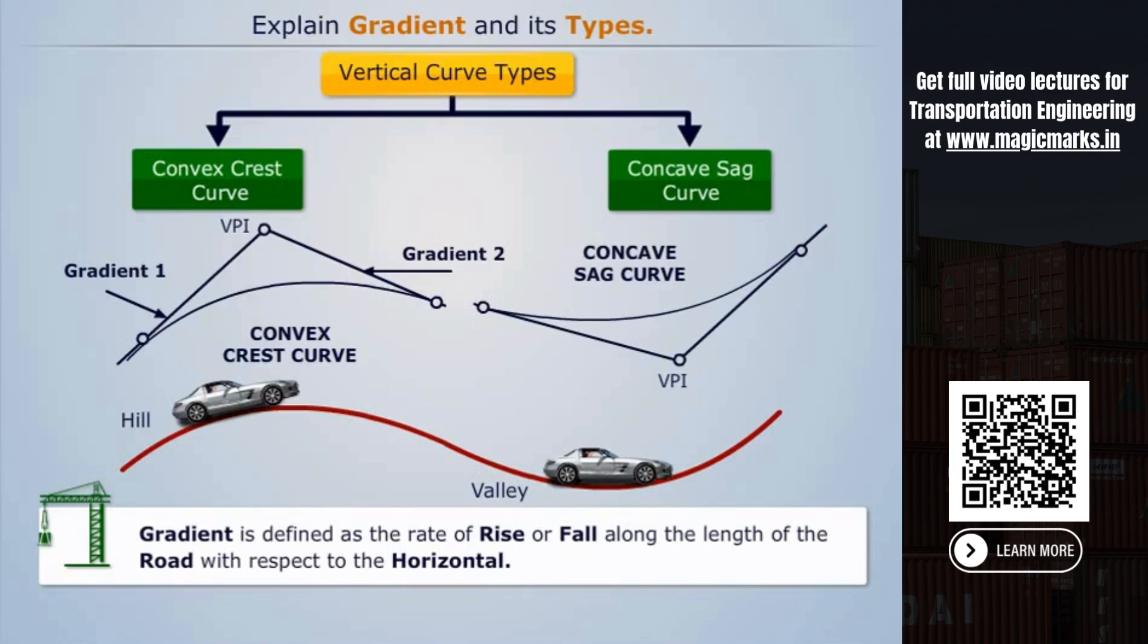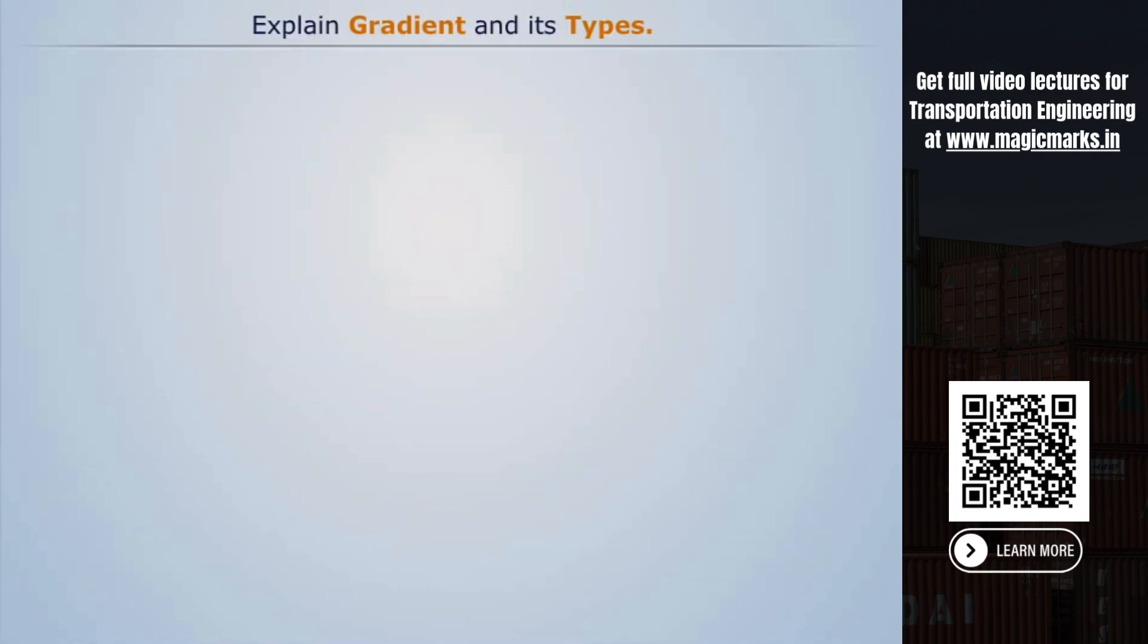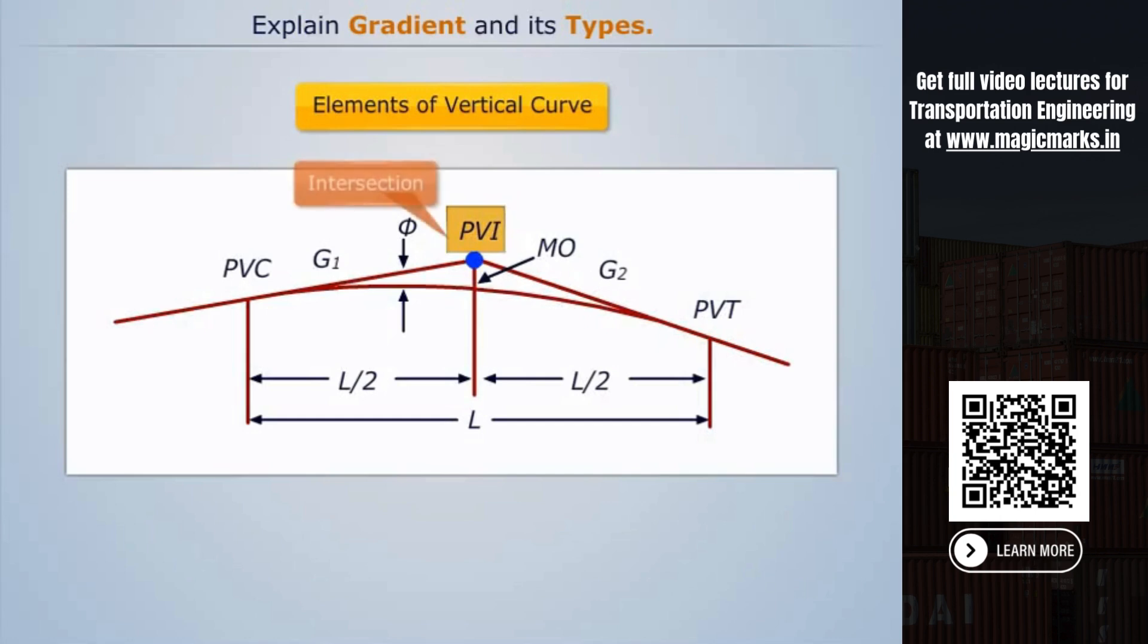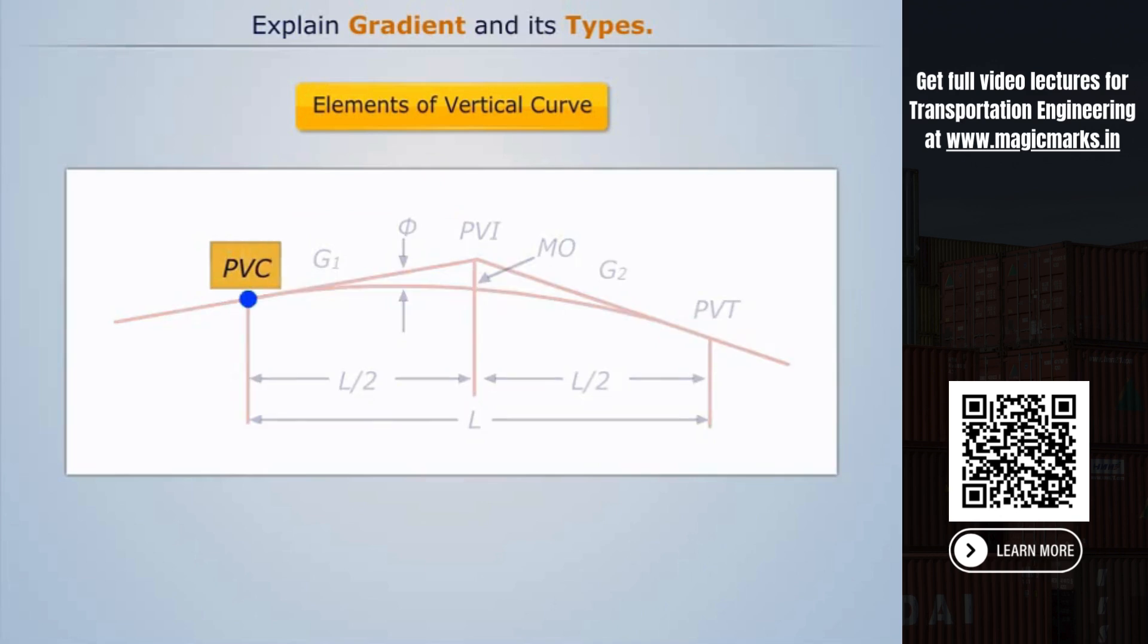Now let's see the elements of vertical curve. The PVI point is the intersection of two grade lines. The PVC is the point along the first grade line at which the vertical curve begins. The length of PVC is always half of the length of the vertical curve from PVI.